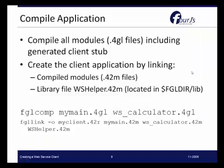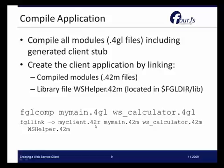Once we've written the part of the application utilizing the functions in the web service, we're going to compile all the modules — all the 4GL files — including the generated 4GL file. We'll also add the helper module, which is located in FGL_DIR_Live, and include that in our program so that we can utilize all of the web service information. To compile, we can use FGL_Comp and the 4GL files. When we link the program — here our program is called myclient.42r — we will link in the modules including the WSHelper 4.2m file. If you're working in Genero Studio, you would just add the external dependency WSHelper.4.2m so that when it builds your program, it's including this helper file.